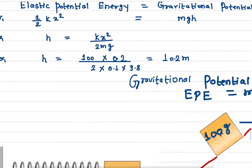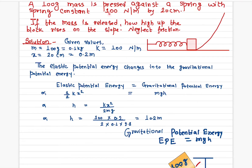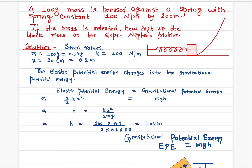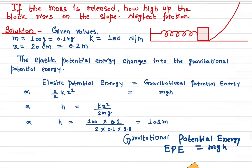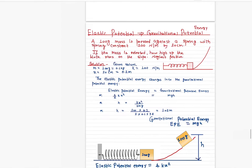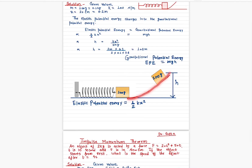All the values are given. The spring constant k is 100 Newton per meter. The compression x is 20 centimeters, which we convert to 0.2 meters — everything must be in SI units. The mass of the block is 100 grams, which converts to 0.1 kilograms. G is 9.8 m/s². Plugging these in gives H = 10.2 meters. So this block will move up along the inclined plane by 10.2 meters.